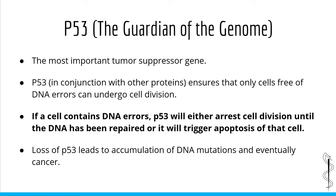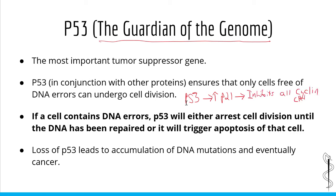P53 is so important in preventing cancer and DNA mutations that it is sometimes referred to as the guardian of the genome. P53, in conjunction with other proteins, ensures that only cells free of DNA errors can undergo cell division, similarly to RB. However, P53 functions in both the G1/S checkpoint and the G2/M checkpoint. P53 works by inducing P21, a protein which inhibits all cyclin-CDK complexes — and without cyclin-CDK complexes, the cell cannot progress through the cell cycle. If a cell contains DNA errors, P53 will either arrest cell division until the DNA is repaired or trigger apoptosis. Loss of P53 leads to accumulation of DNA mutations and eventually cancer. In fact, almost 50% of all malignant tumors have mutations in P53.